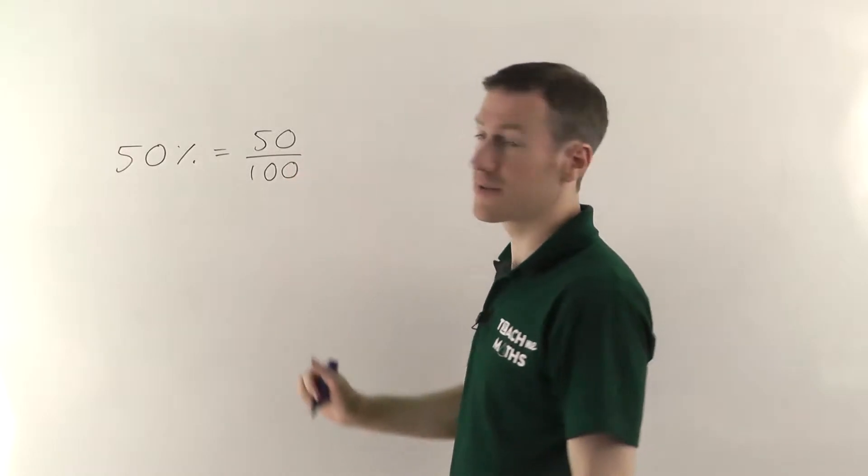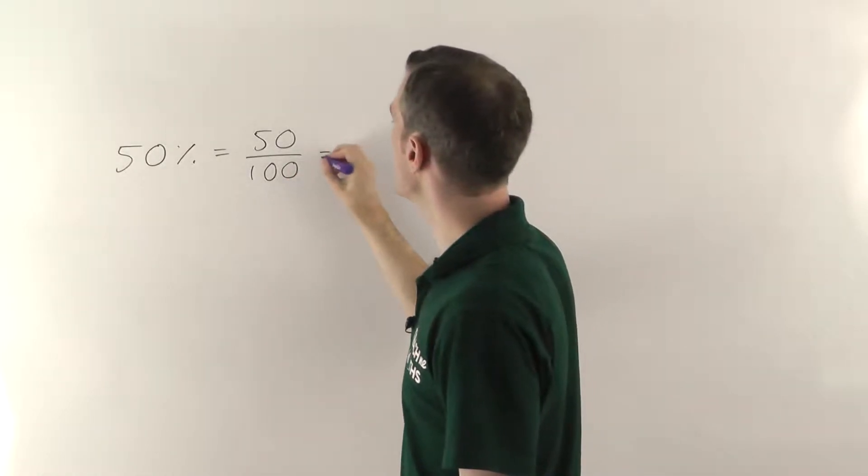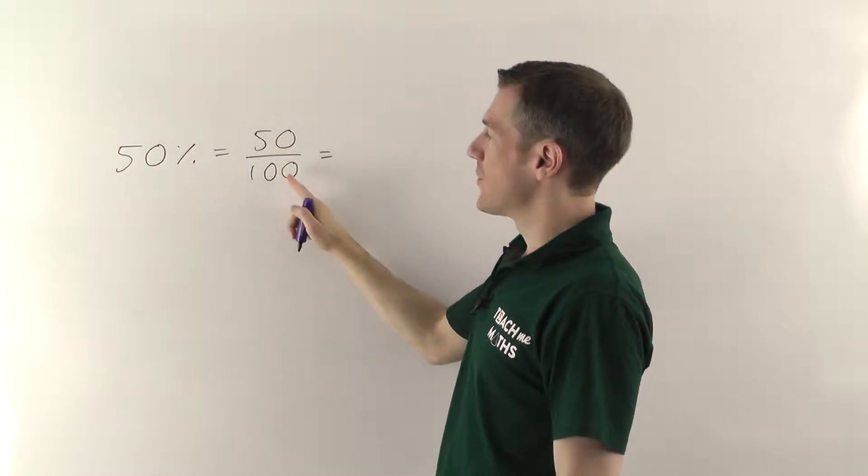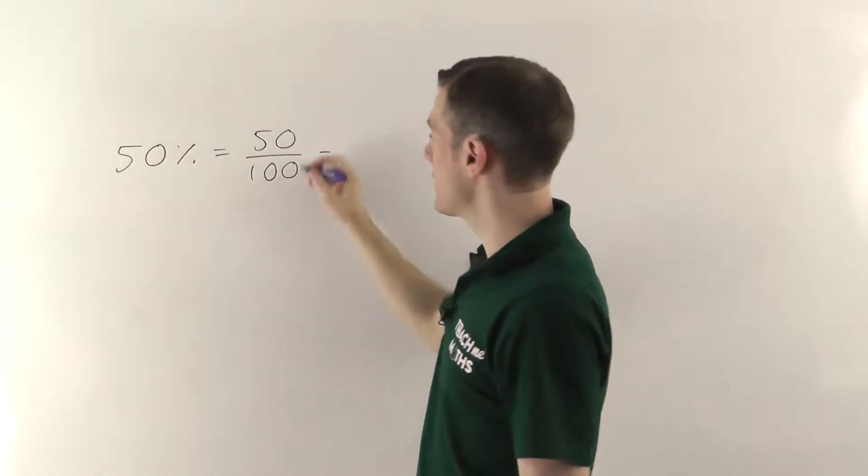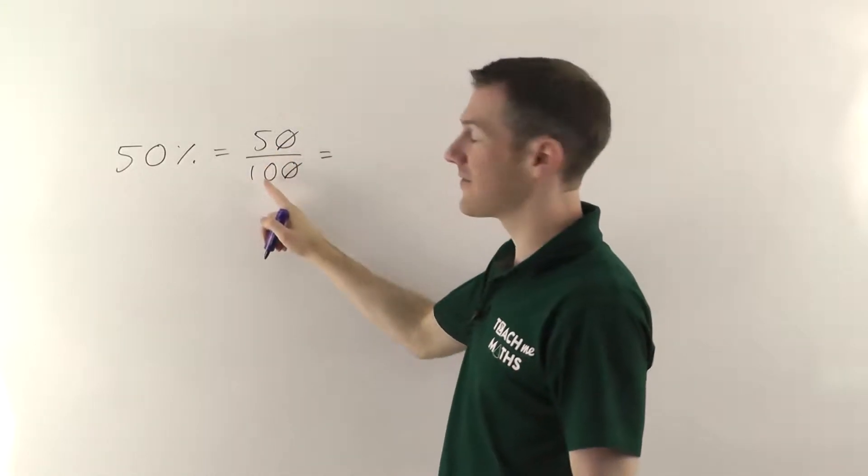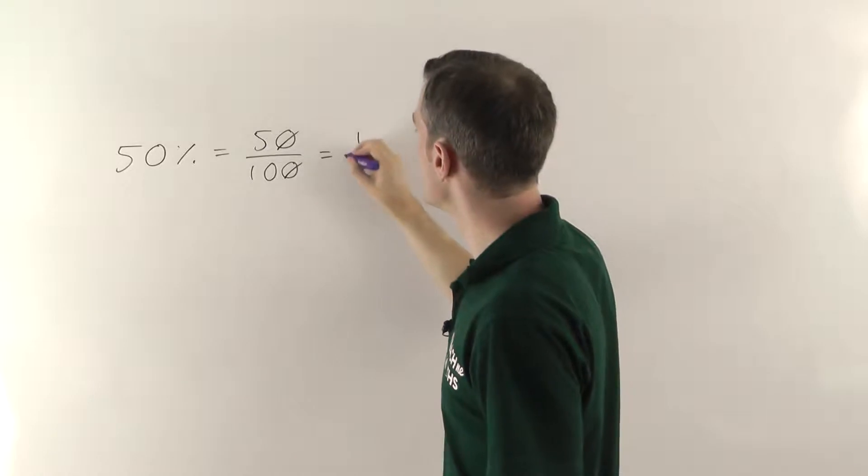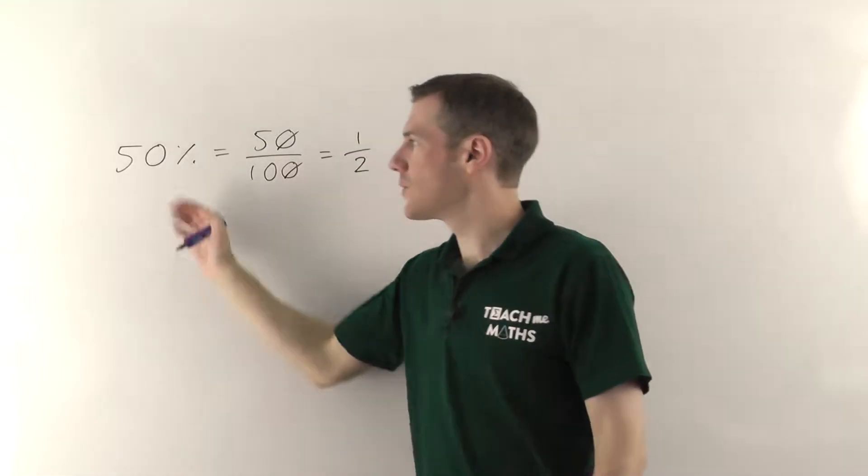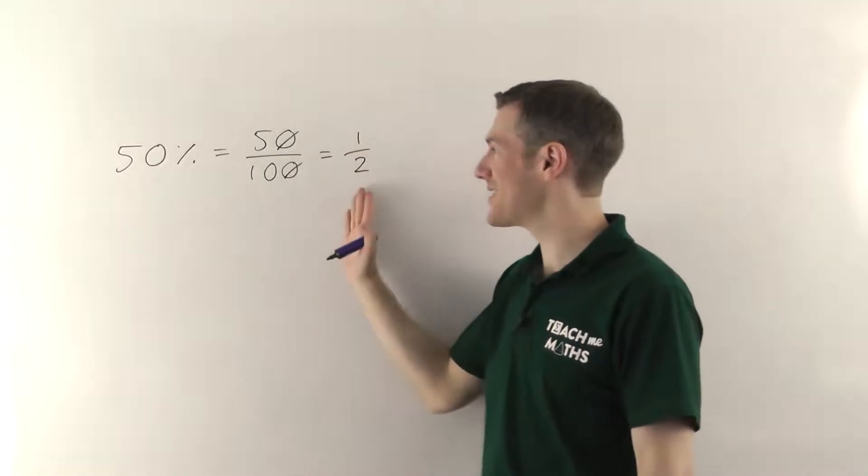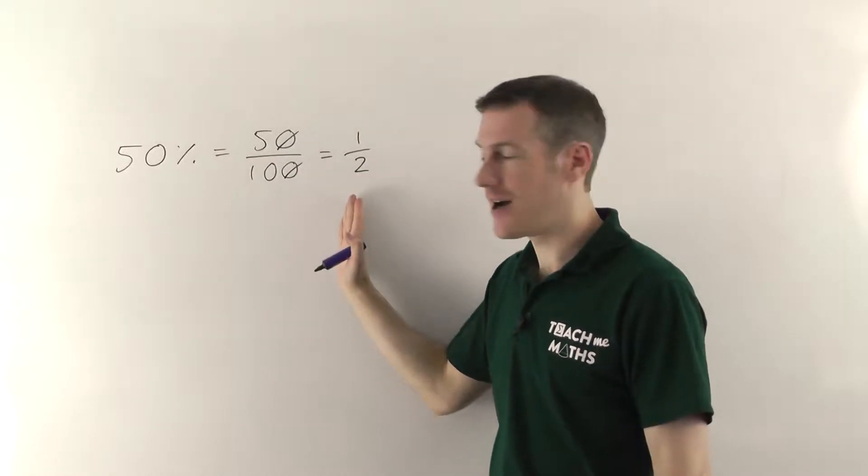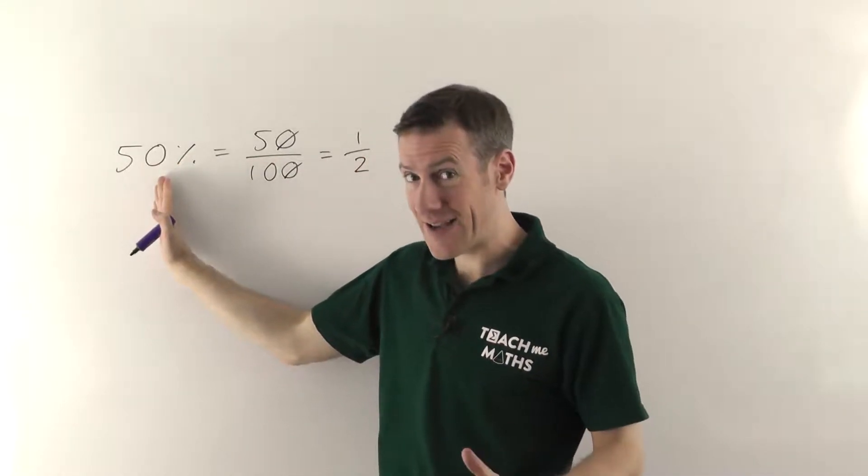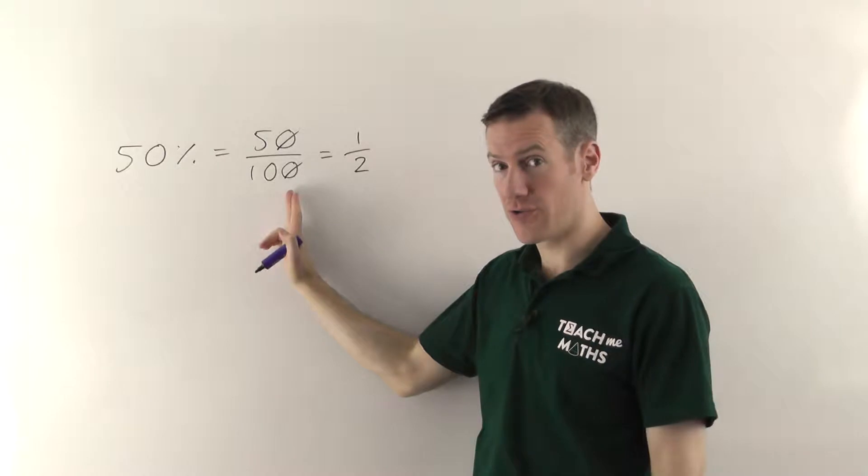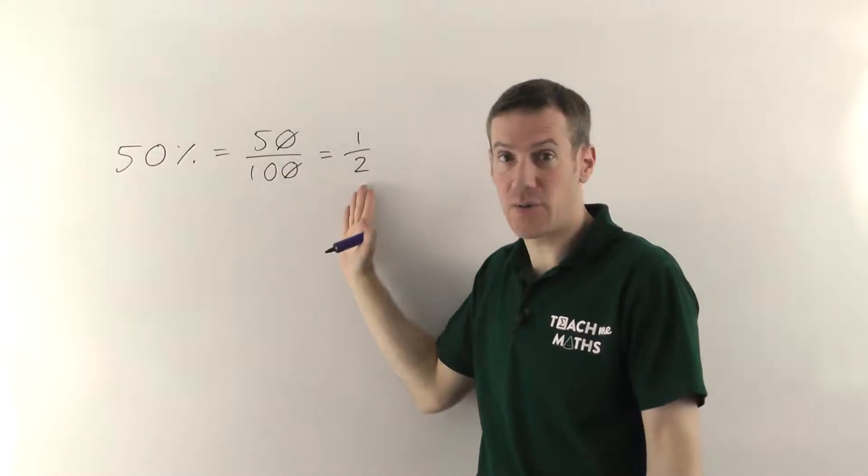And if we were to cancel this fraction down, obviously you can divide the top and bottom by 10 or just cross the zeros off. And then 5 tenths would cancel down to a half. So, I mean you've probably realized already that 50% is a half, but that's why it's a half. It's because any percentage by definition is a fraction out of 100. And then you can cancel it down to find out what the actual fraction is.